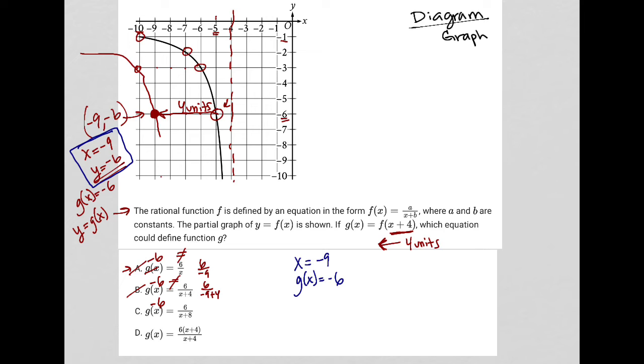So when I plug in negative six for my g(x) here, I can then plug in x. This becomes six over negative nine. I think we found it: negative nine plus eight, which is six over negative one, and that makes this true, right? So choice C is true.